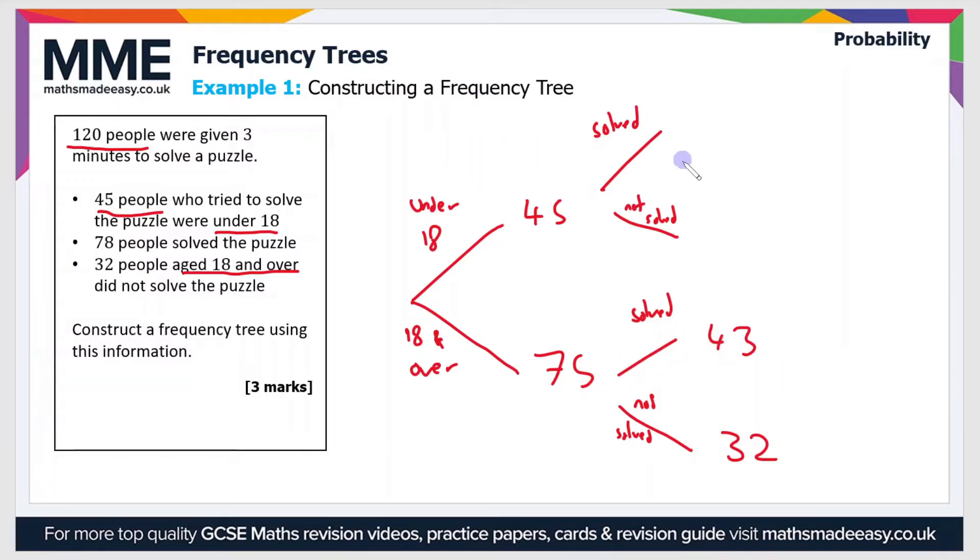So how are we going to fill out these top two branches? Well, we know that 78 people solved the puzzle in total, and 43 of those people are aged 18 and over, so that's this branch here. In order to work out the people who are under 18 and solve the puzzle, we just do 78 minus 43, and that gives us 35.